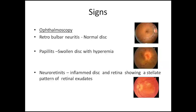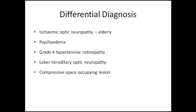In cases of papillitis, there would be a swollen disc along with hemorrhages, tortuous and filled veins. In cases of neuroretinitis, there would be disc changes along with macular changes or retinal nerve fiber layer changes, also showing a stellate pattern of retinal exudates. Now coming to the differential diagnosis of optic neuritis.